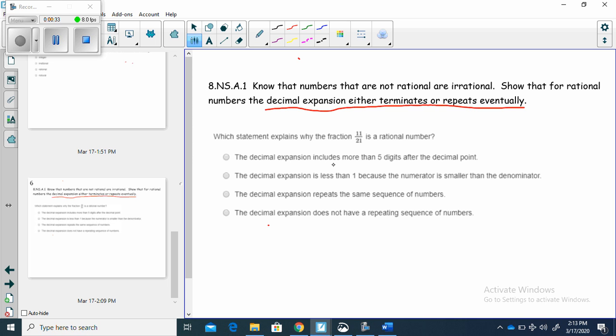The decimal expansion includes more than five digits after the decimal point. It doesn't say anything about that. The decimal expansion is less than one. It doesn't say anything about that.